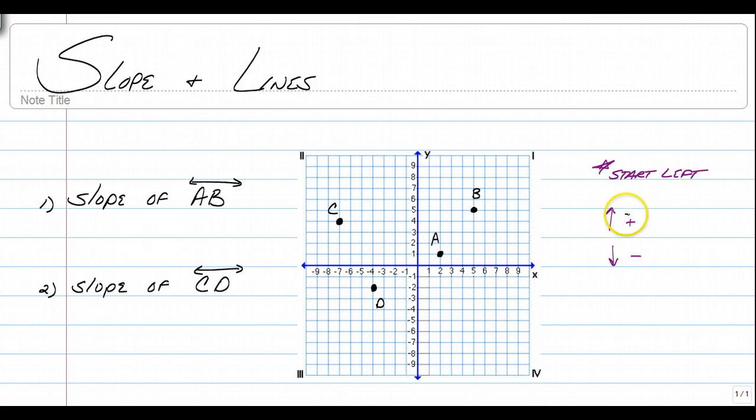To find the slope of AB, first you just count how far you go up or down. So this needs to go up 1, 2, 3, 4. We went up 4.